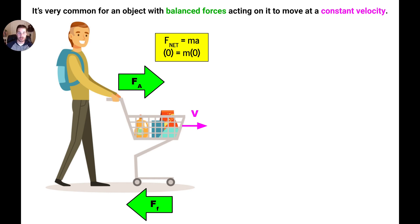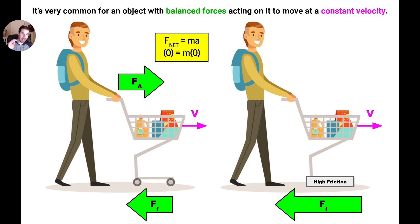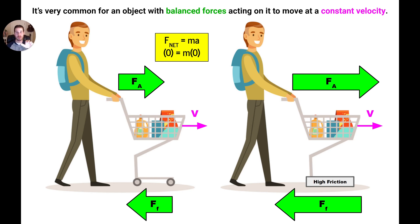If you changed the engineering of a shopping cart to make it less efficient — like removing the wheels and replacing them with a bar of metal that has to grind against the tile — you'd get a huge frictional force preventing the cart from moving forward. If you still want that cart to move at a constant velocity, you'd have to push with a really strong applied force. But if you push hard enough, you can still get the same constant velocity. So keep in mind: when an object is moving forward, that doesn't necessarily mean there's a net force. It could just mean that whatever forward forces are acting on it are being perfectly canceled out by the forces opposing it.